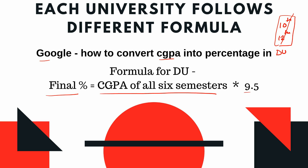For DU, the formula is: final percentage equals CGPA of all 6 semesters multiplied by 9.5. So for example, if your result is 89.88, use that figure. Please don't try to convert it into something else — if points are given to you, write the points. Otherwise your form may be cancelled, because writing a fake percentage is not acceptable.